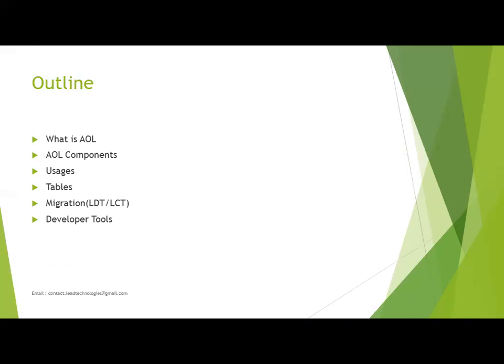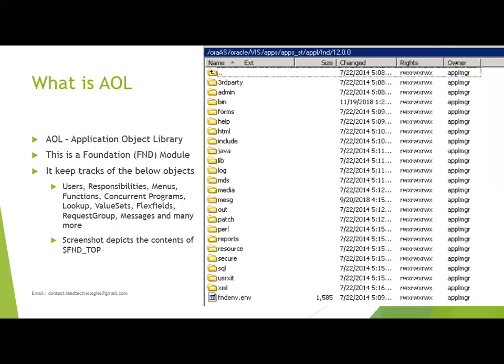We'll also cover the purpose and usages in the real-time world, and what tools are required if you want to learn the AOL module of eBusiness Suite. Oracle eBusiness Suite is an ERP application with around 150 plus modules. Each module has a set of functionality — for example, GL is for general ledger, AR for accounts receivable, AP for accounts payable. In the same way, we have a basic module called AOL, Application Object Library, which is also a foundation module.